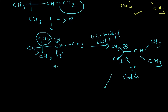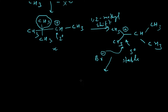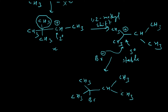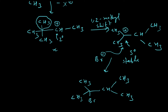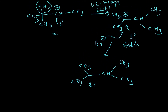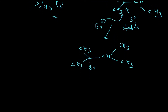After that, Br⁻ or I⁻ attacks the carbocationic center and the product forms. So we can explain this type of addition reaction by considering Markovnikov's rule together with carbocationic rearrangement.